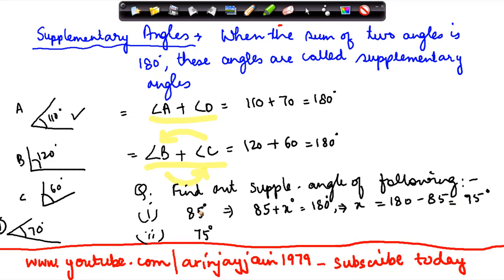So 95 degrees is the supplementary of 85. Similarly, for 75 also, instead of getting into the details, I can do straight away this. So the supplementary of 75 is 105 degrees.